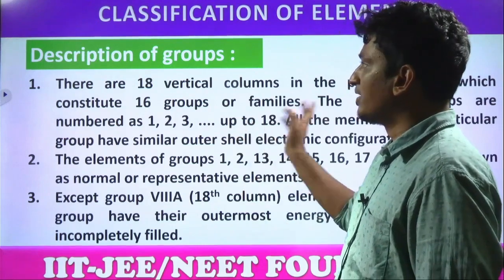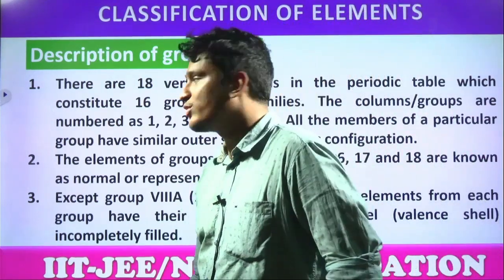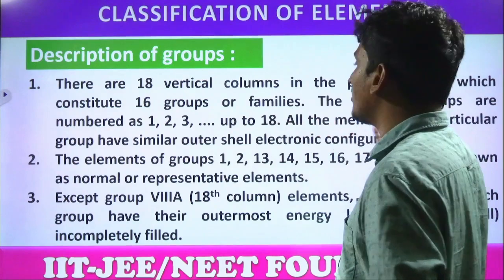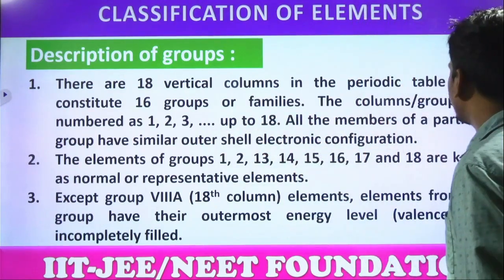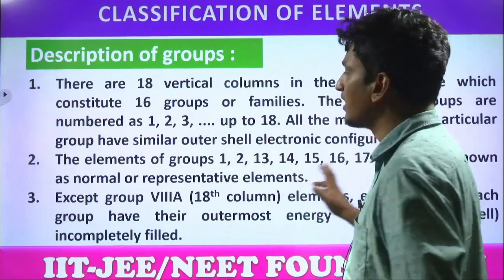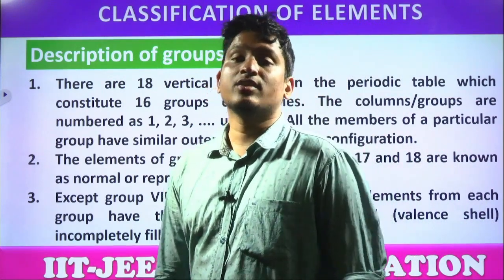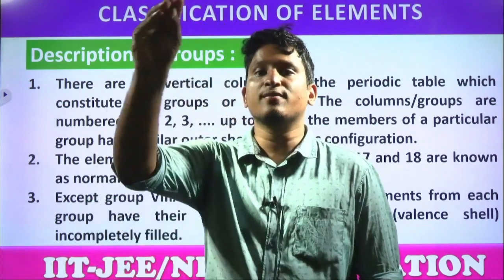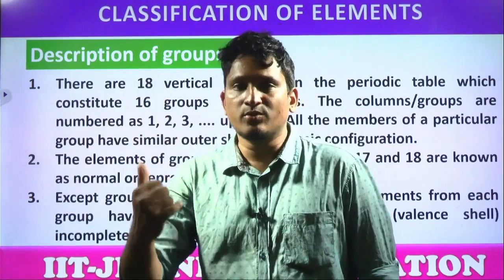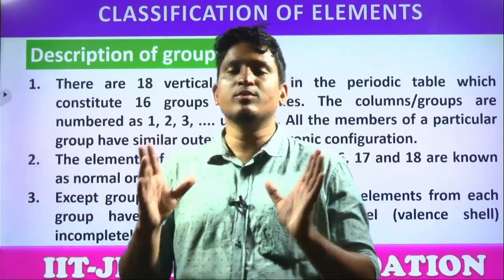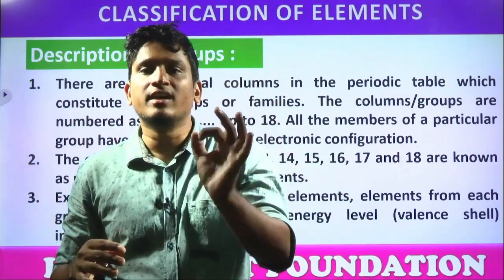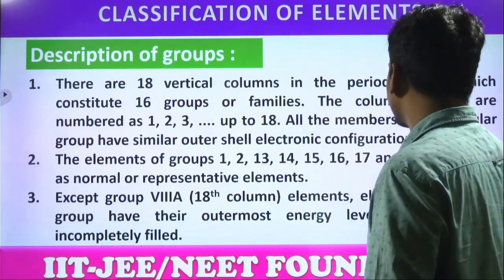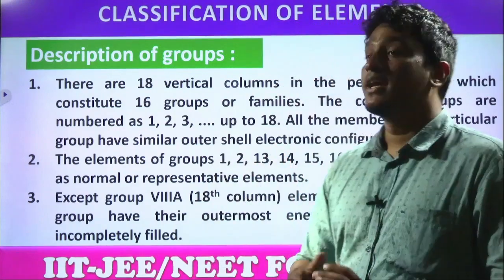Next, description of groups. There are 18 vertical columns in the periodic table forming 16 groups or families, numbered 1 to 18. All members of a particular group have similar outer shell electronic configuration. These elements are classified not just by atomic number but also by electronic configuration. Group 1, 2, 13, 14, 15, 16 — that means s-block and p-block elements — are called representative elements.